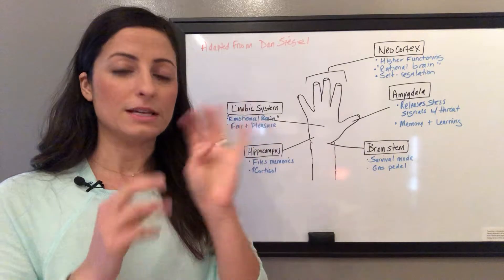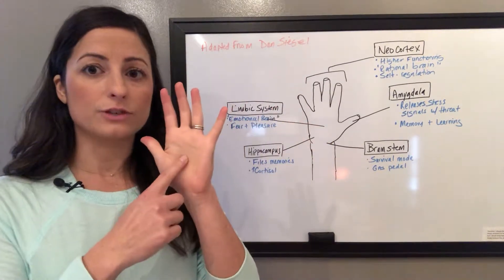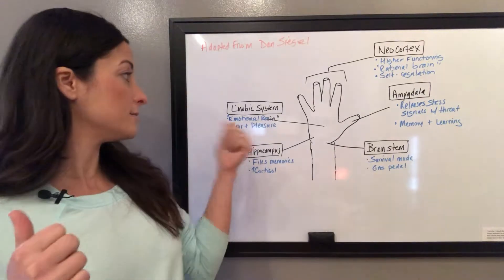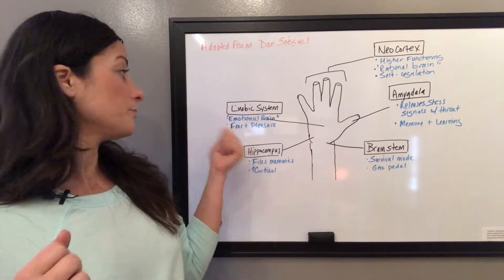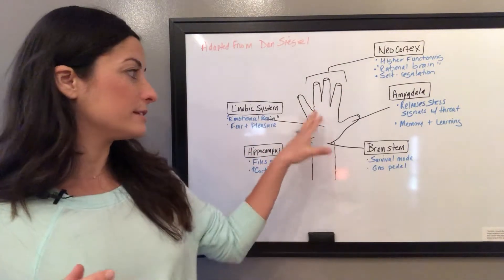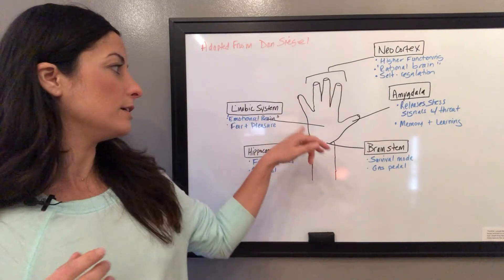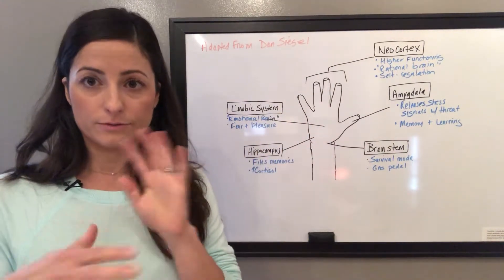Inside your palm is the limbic system, the emotional brain, which is responsible for fear and pleasure. Again, a lot of these systems are put in place for survival and they become very automatic for some.